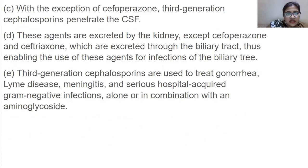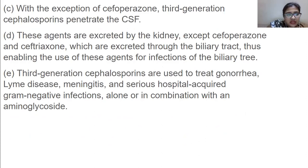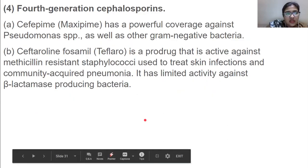With the exception of cefoperazone, third generation cephalosporins penetrate CSF. These agents are secreted by the kidney except cefoperazone and ceftriaxone, which are excreted through the biliary tract, enabling their use for biliary tract infections. Third generation cephalosporins are used to treat gonorrhea, Lyme disease, meningitis, and serious hospital-acquired gram-negative infections, alone or in combination with an aminoglycoside.